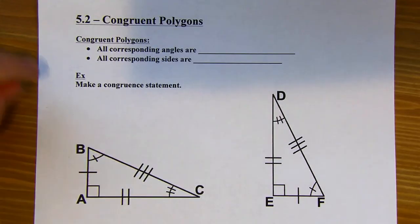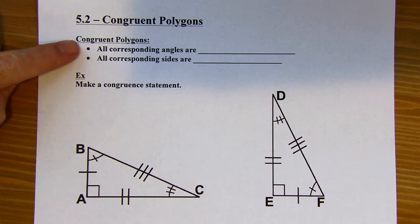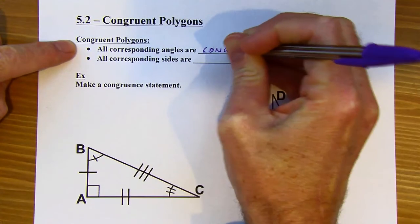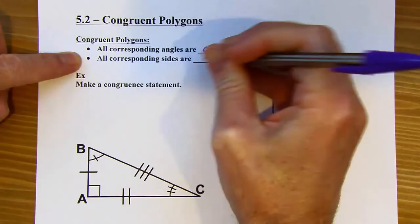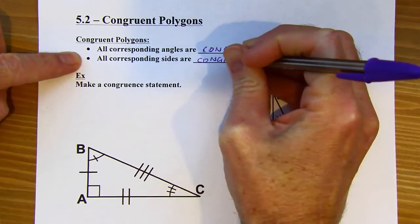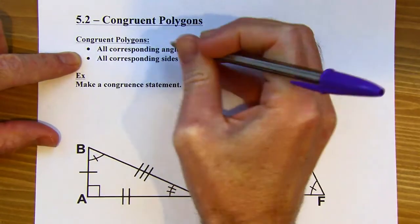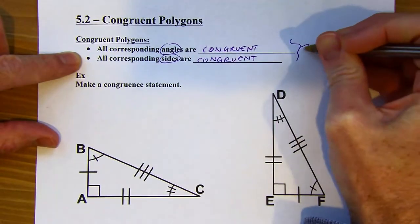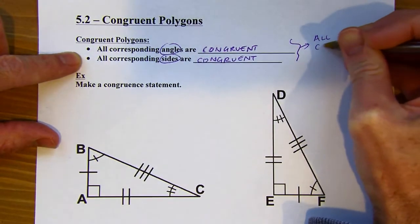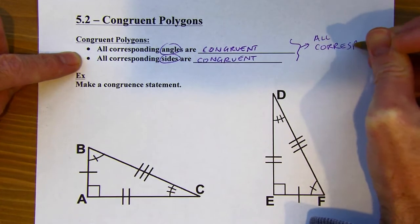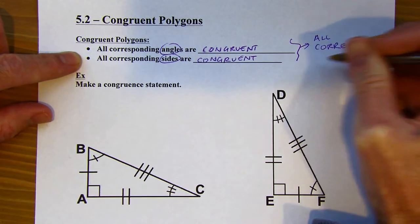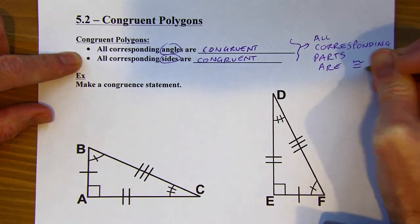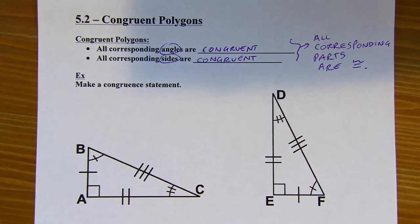Section 5.2: Congruent Polygons. In congruent polygons, all corresponding angles are congruent, and all corresponding sides are also congruent. Sometimes you'll see this summarized as all corresponding parts are congruent. What they mean by parts are sides and angles. So they're the same size and shape.